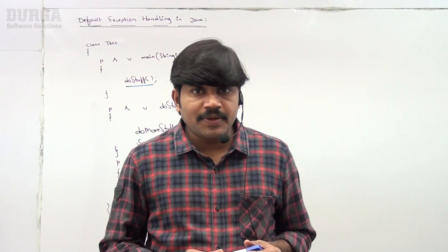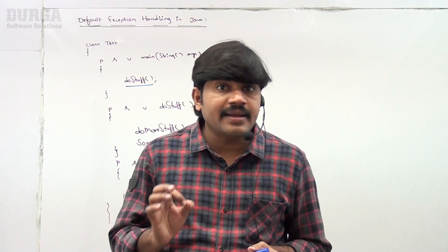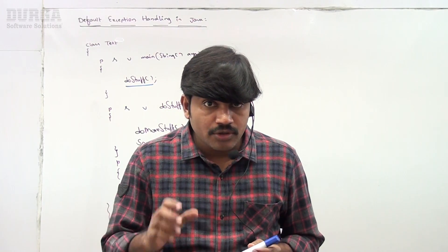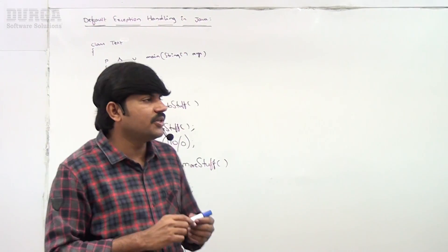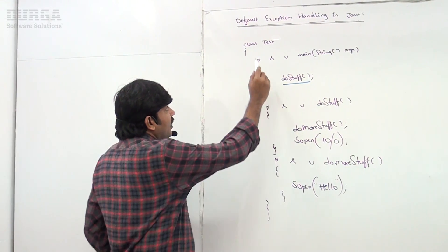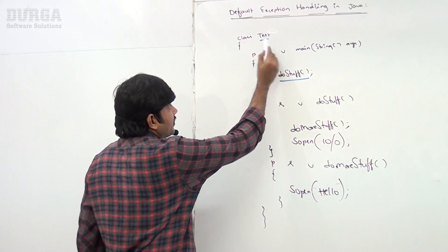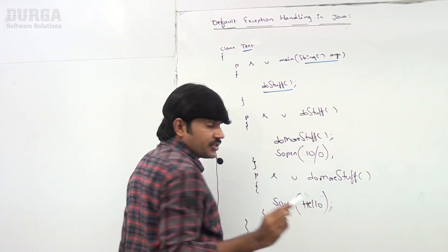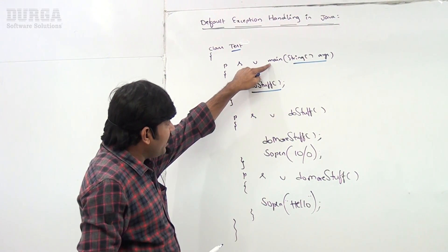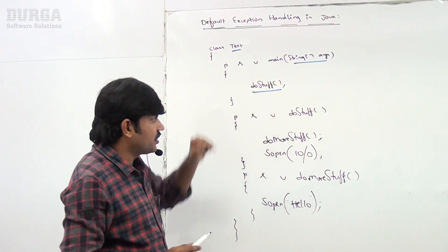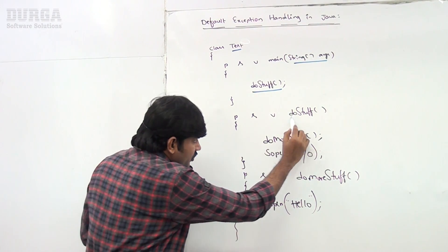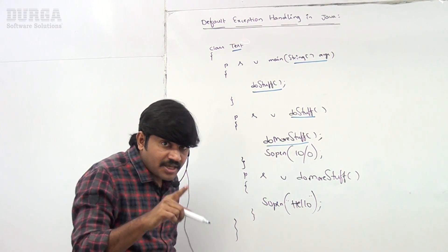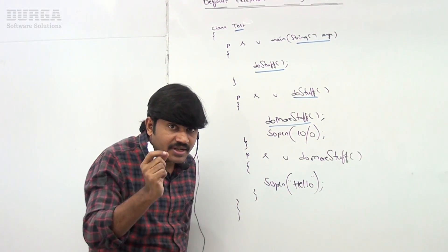Now I will explain a second example related to default exception handling so that you can get much clarity. Here we have class Test with a public static void main method. The main method calls doStuff, doStuff calls doMoreStuff — same structure as the previous example, but observe the difference.